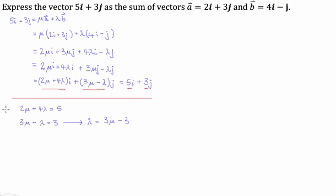We're going to be solving these simultaneous equations using the substitution method. So I'm going to now substitute this expression for lambda into the lambda in the first function. So I'm going to get 2 mu plus 4 times lambda, which we've worked out is equal to 3 mu minus 3, and that has got to be equal to 5.